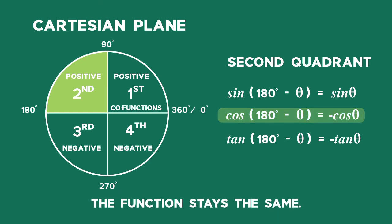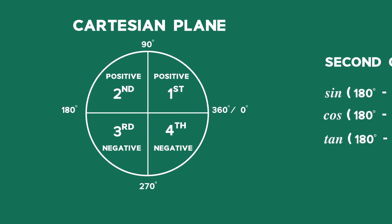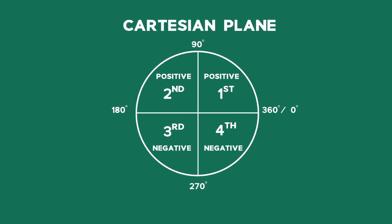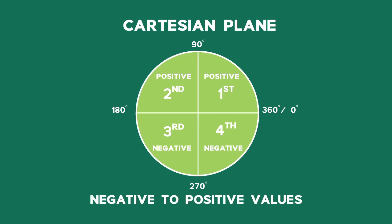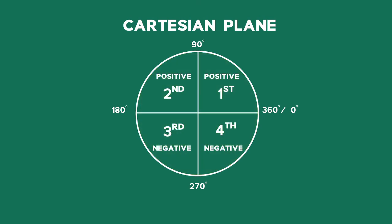As you move through the different quadrants on the Cartesian plane, your different trigonometric ratios will change from negative to positive values. Later on, we'll look at examples and questions where we use these reduction formulae to help us simplify expressions.